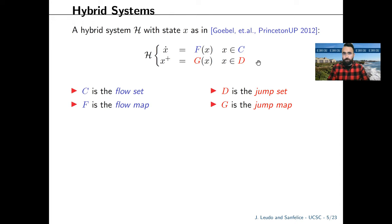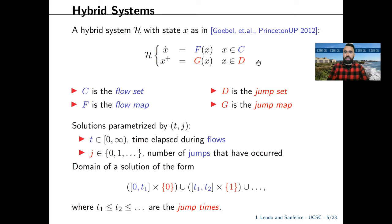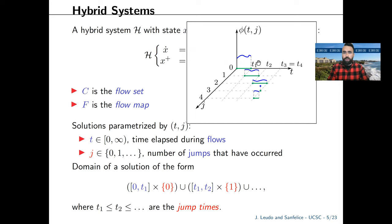A hybrid system with state x is given by a hybrid equation composed of a differential equation and a difference equation. The differential equation is defined in terms of a flow map f when the state is in the flow set C. The difference equation is defined in terms of a jump map g when the state is in the jump set D. Solutions are parameterized by the pair (t, j) where t is ordinary time and j is the number of jumps, defined on a hybrid time domain.